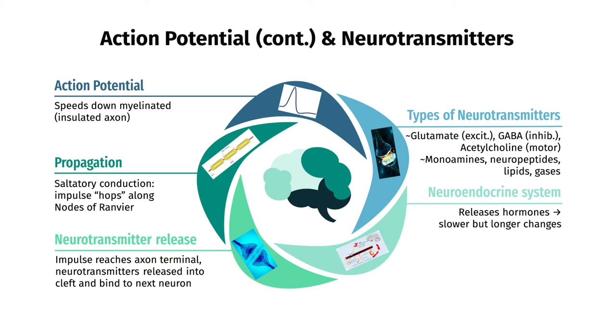Once the nerve impulse, the depolarization, reaches the axon terminal, neurotransmitters are released via exocytosis and bind to the receiving neuron, which can cause yet another action potential in that neuron.